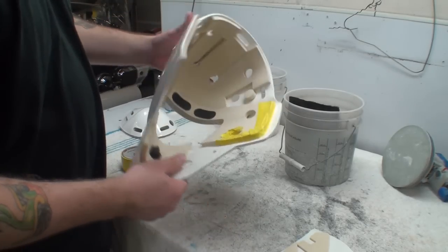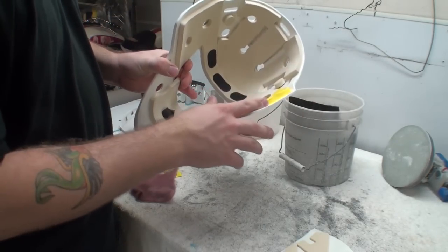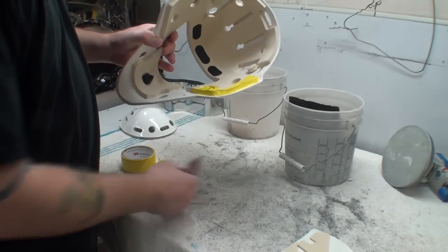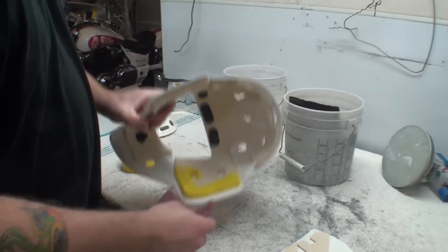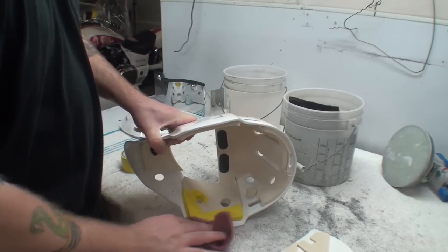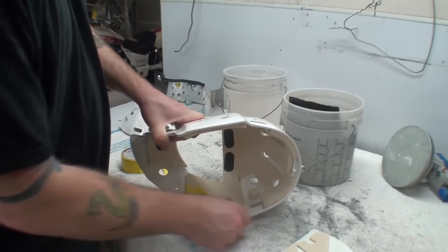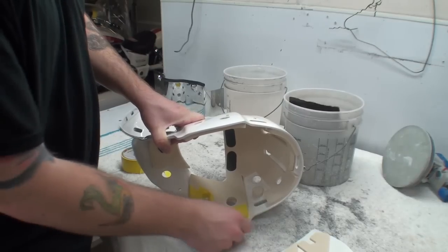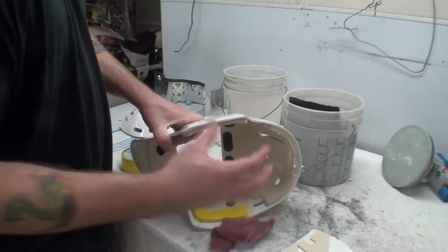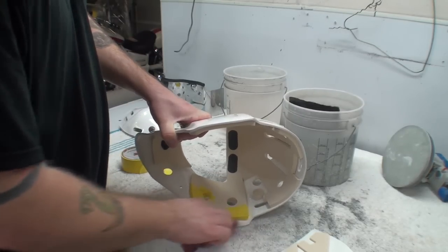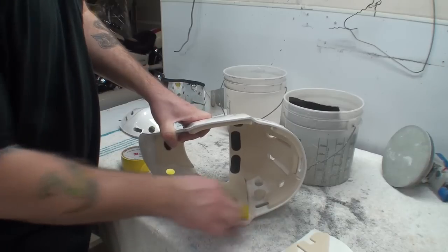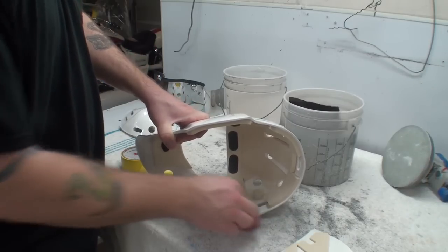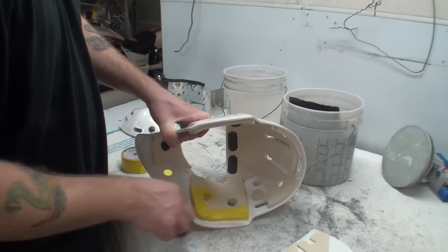Next what we're going to do is once we have our stuff laid out for tape we're going to do a dry scuffy pad along right here on the edges. It's going to give the texture on the paint a nice dry and rough feeling for the paint to really grab onto.